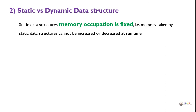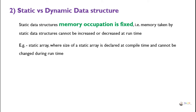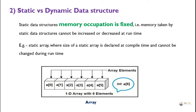The second classification is static versus dynamic. In a static data structure, memory occupation is fixed — the memory taken cannot be increased or decreased at runtime. For example, a static array declared as int A[6] has its size fixed at compile time and cannot be changed during runtime.